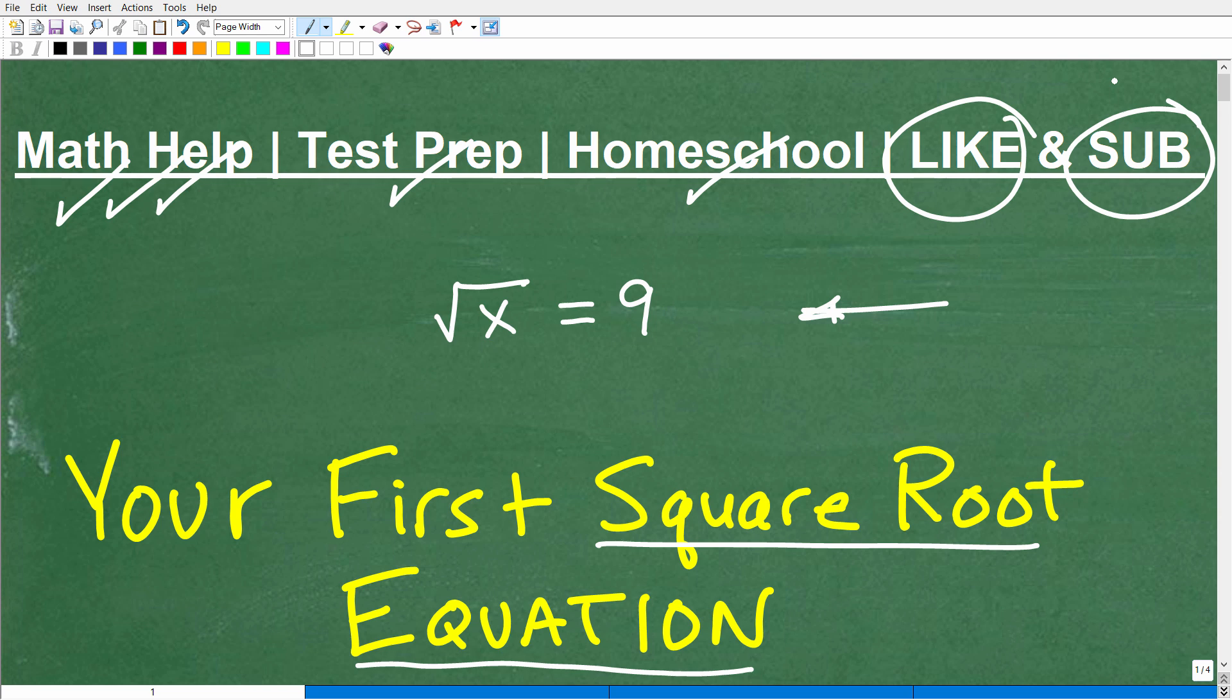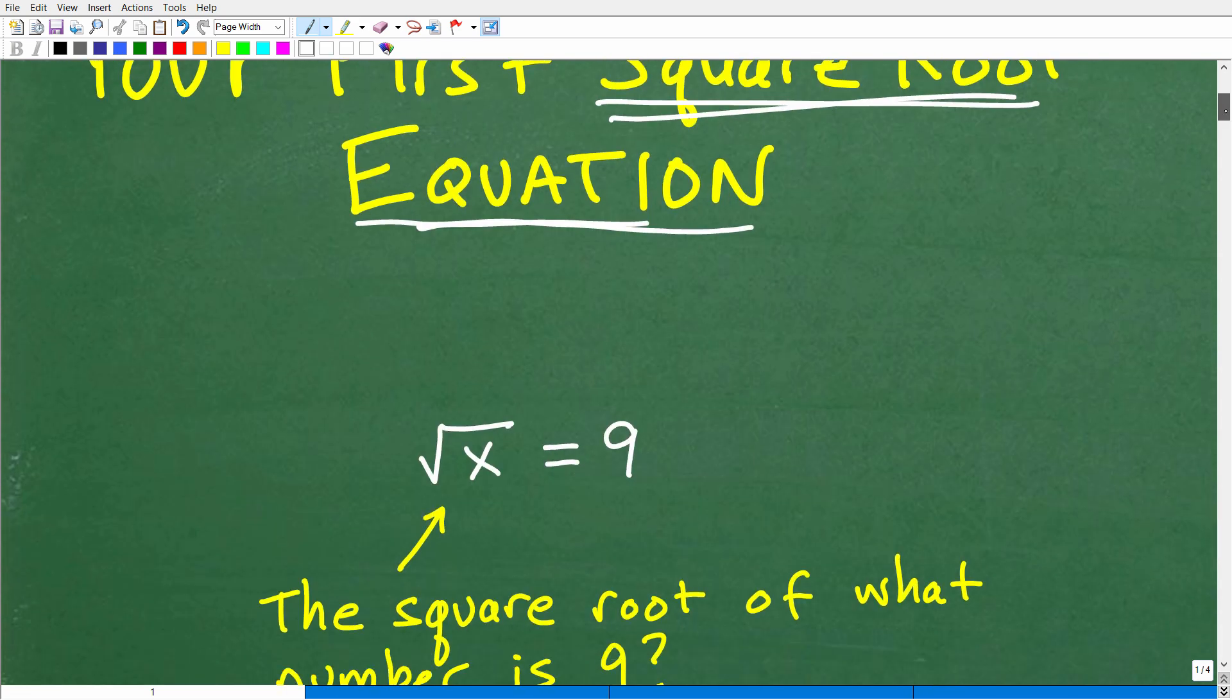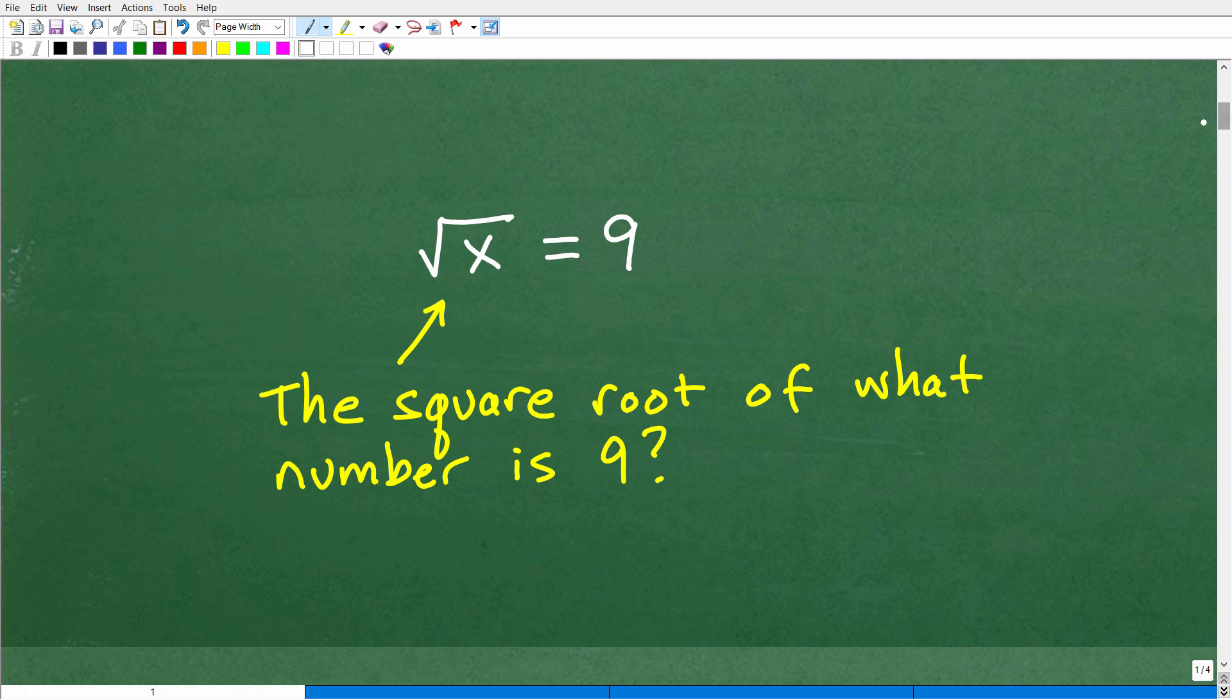But let's go ahead and get going and work on this one problem. You're going to understand this problem so thoroughly that any time you see square root equations from this point forward, you're going to get them right every single time. So that's the idea here. But let's go ahead and look at this equation. Okay, so here mathematically we have the square root of X is equal to 9. Solve this equation. But what is X?